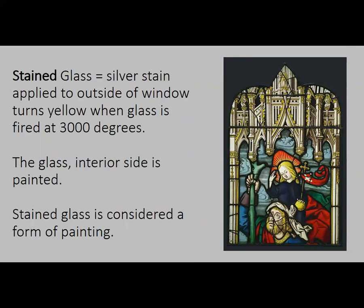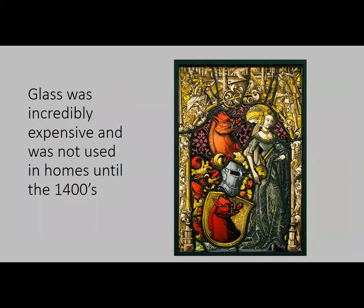The interior side of the glass is painted. Nowadays people use different colored glass rather than paint it. Stained glass in and of itself is considered a form of painting. To make stained glass back then was unbelievably expensive and took a lot of time, so even rich people didn't start using it in their homes again until the 1400s.